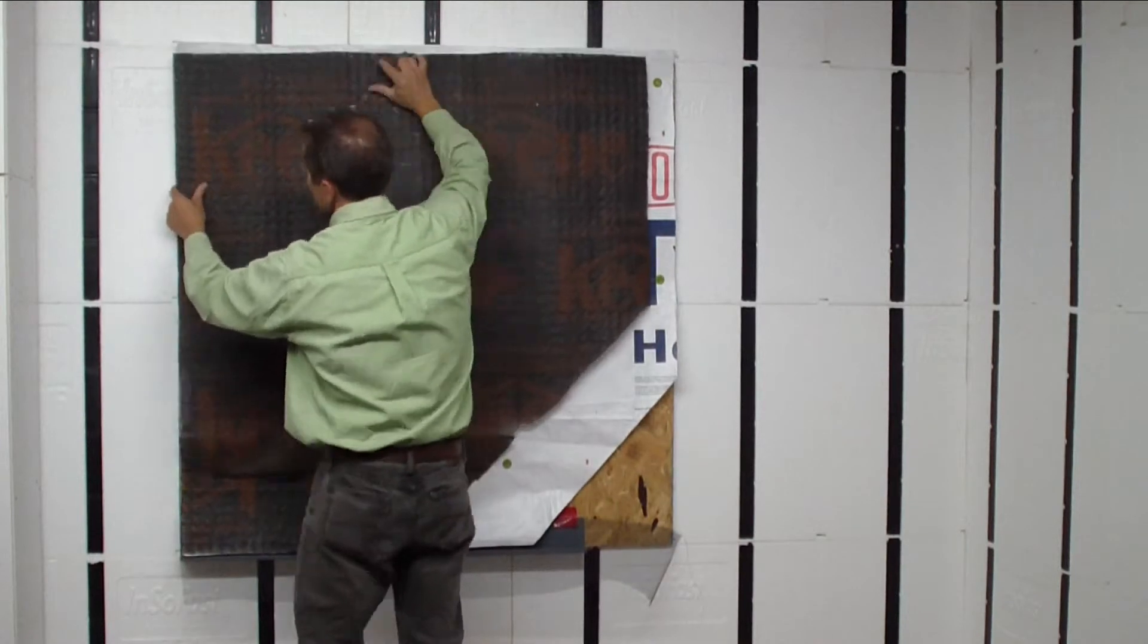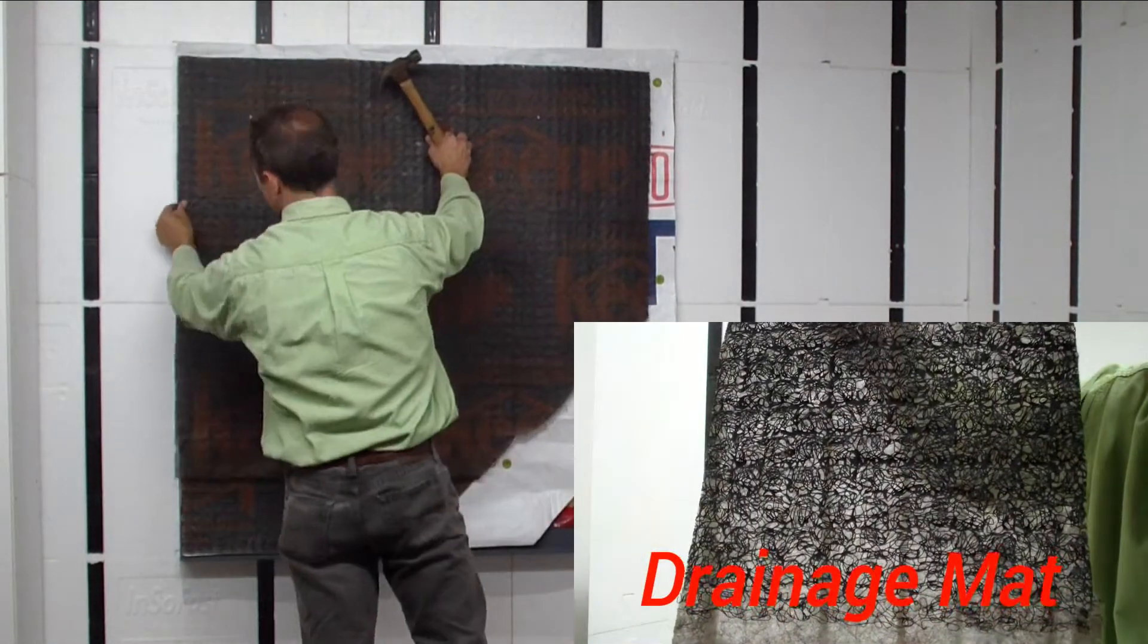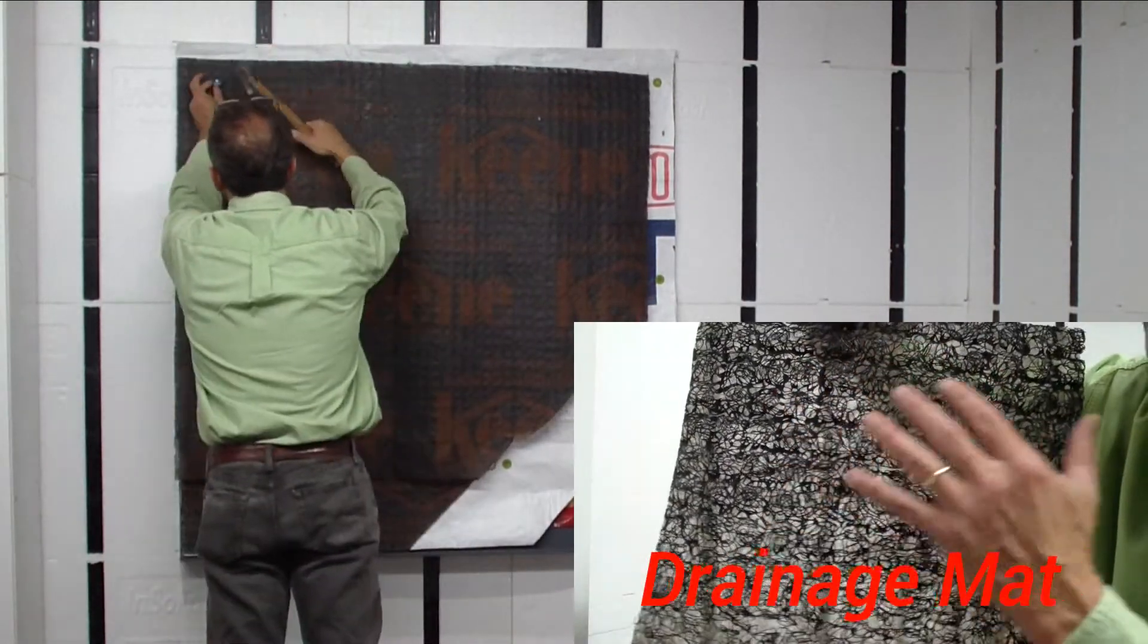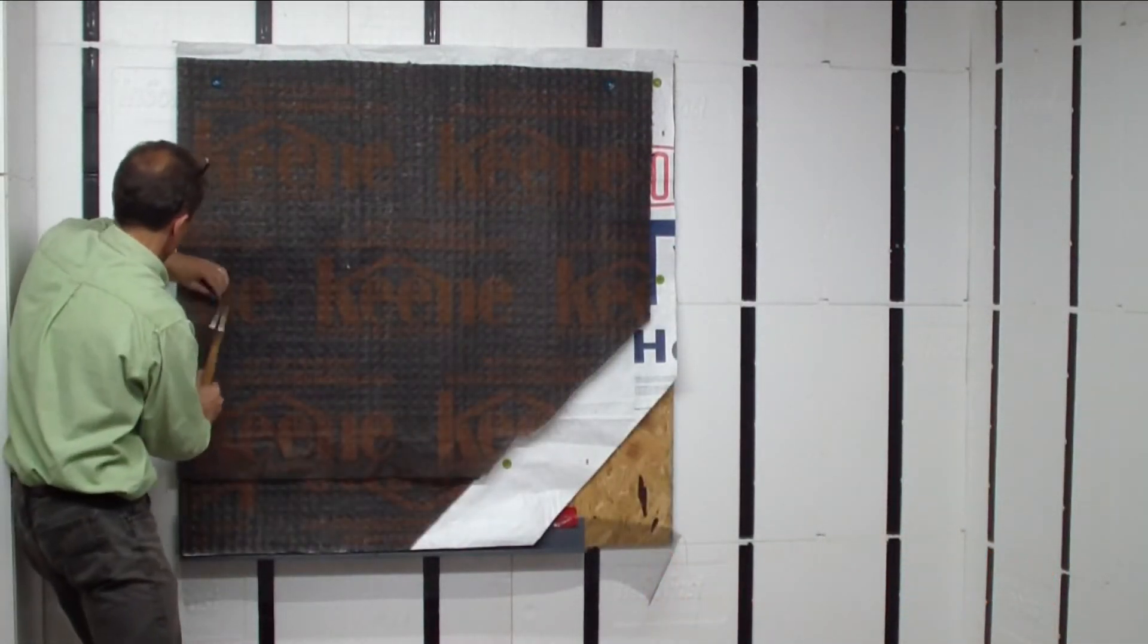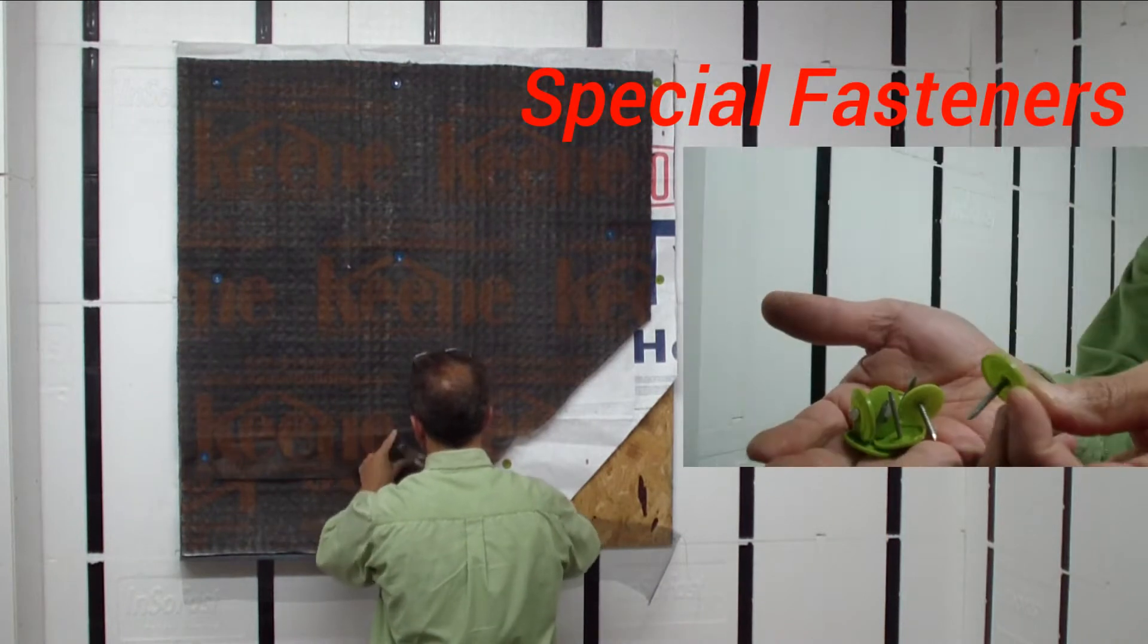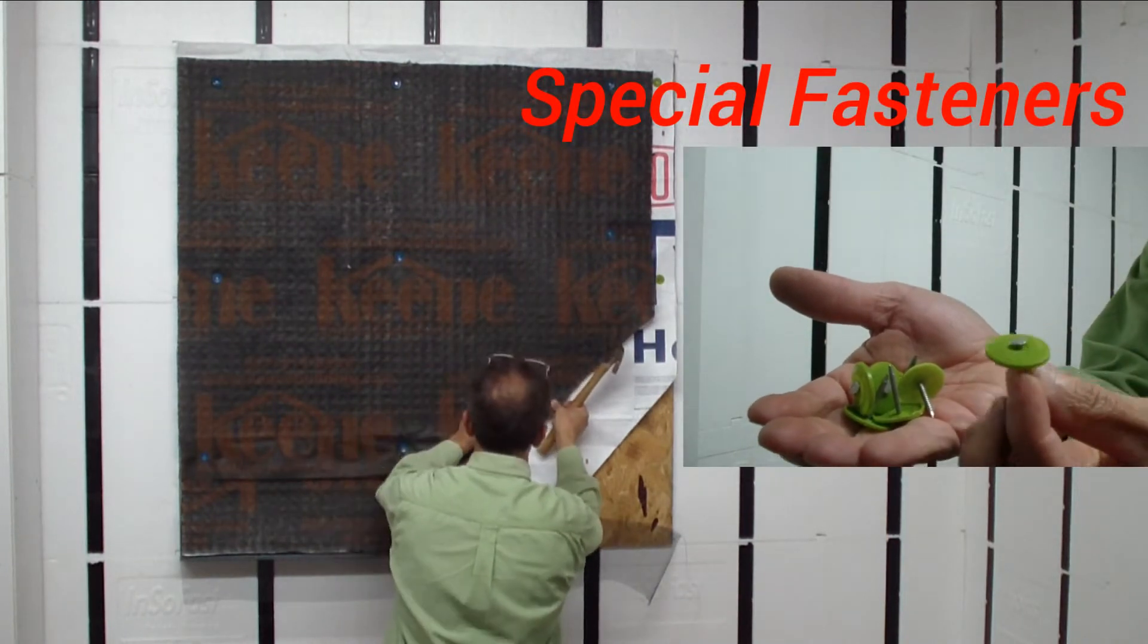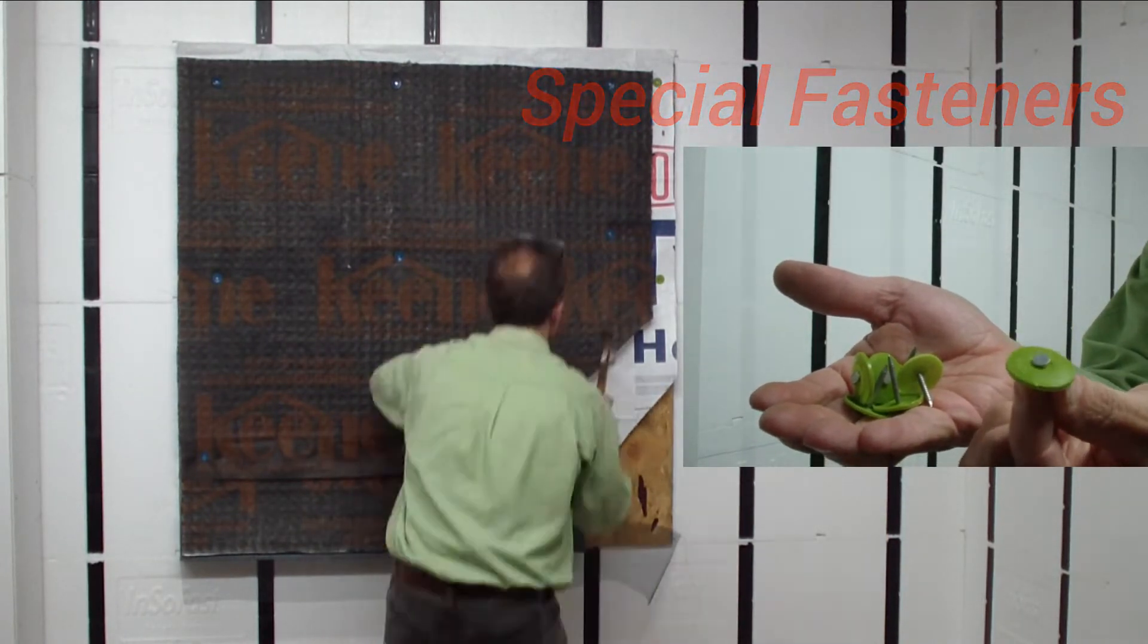The first step in this complicated process is a drainage mat. A drainage mat is important because water will eventually get through all of your layers of protection, so you want to provide this moisture control layer. Nail plastic cap washers through the air barrier to hold the drainage layer in place.